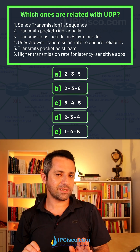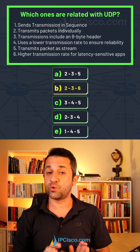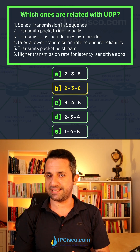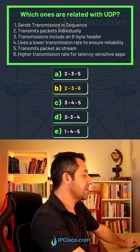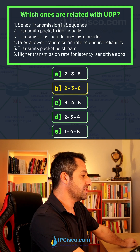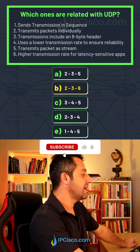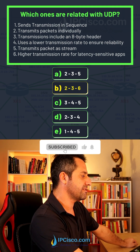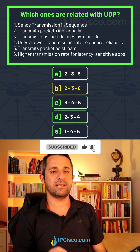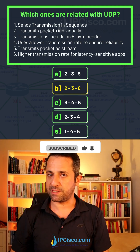So our answers are 2, 3, and 6. Let's remember again: transmits packets individually, transmission includes an 8-byte header, and higher transmission rate for latency-sensitive applications.